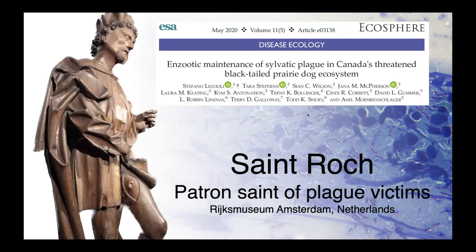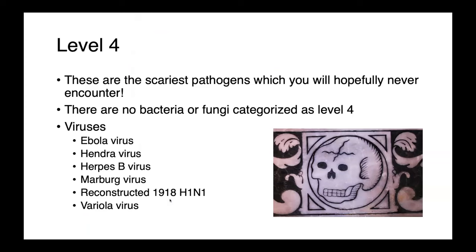Yersinia pestis is an important disease historically — this is a sculpture from the Rijksmuseum in Amsterdam of the patron saint of plague victims. And finally, level four. These are some of the scariest pathogens which you will hopefully never encounter. There are no bacteria or fungi categorized as level four — this is really the domain of our nasty viruses: things like Ebola, Hendra virus, herpes B virus or simian herpes virus, Marburg virus, reconstructed 1918 H1N1 influenza, and variola virus — only the most risky, threatening pathogens.